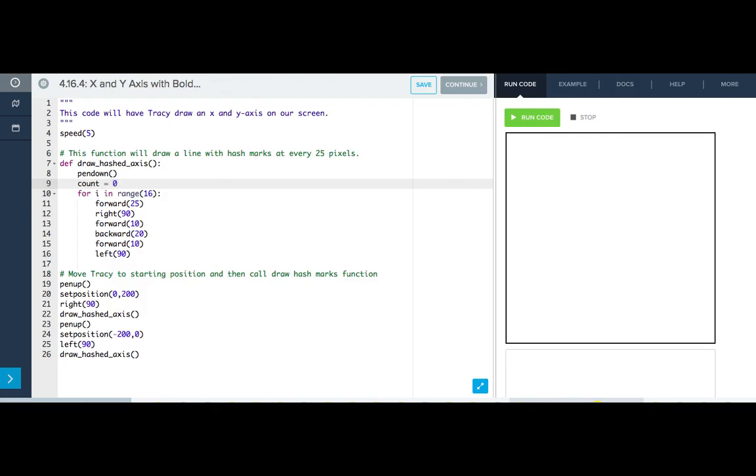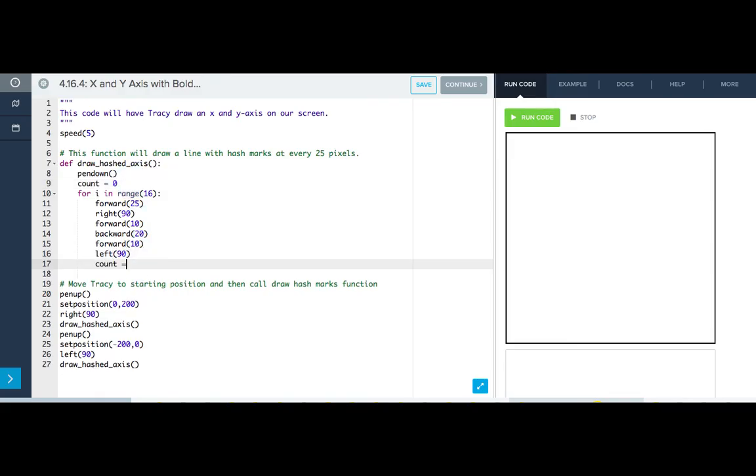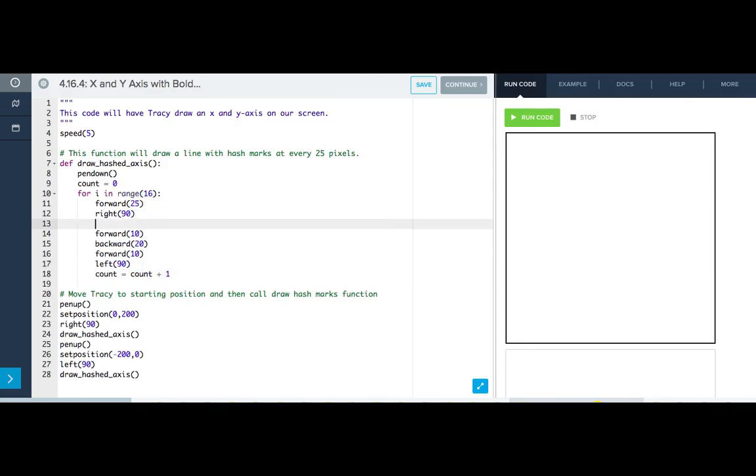Now throughout my loop, I want to increase the value of my variable count each time a hash mark is drawn. So at the end of my loop, I'm going to write count equals count plus 1. Now that my code is keeping track of each hash mark number, I want to use this value to tell Tracy when to bold my lines. Right before she draws the hash mark with the command forward 10, I'm going to write an if statement.